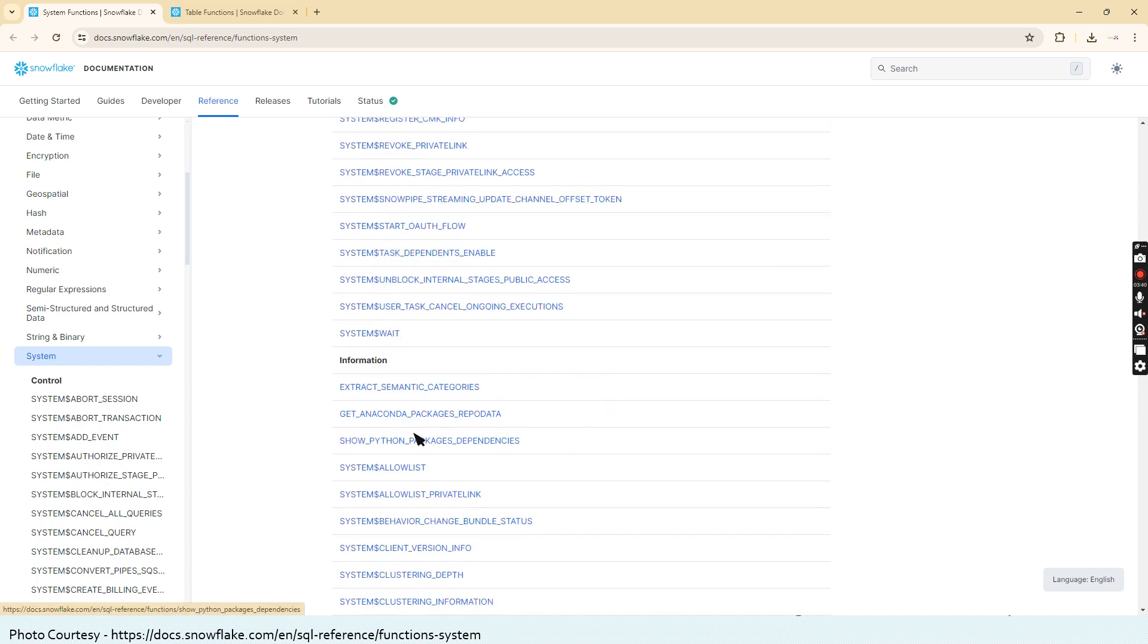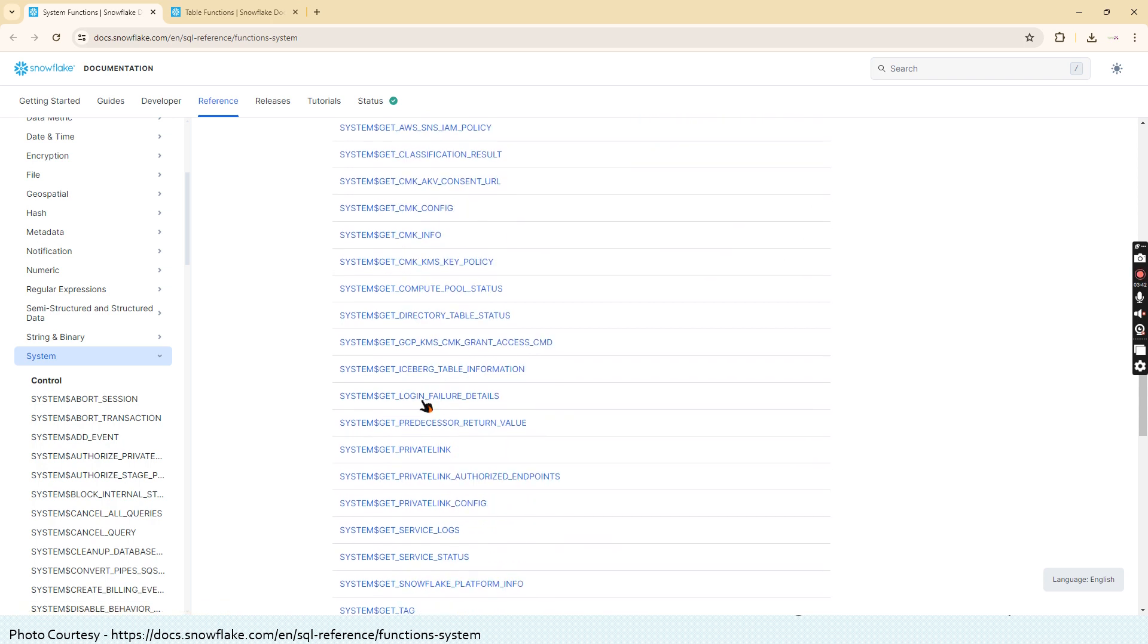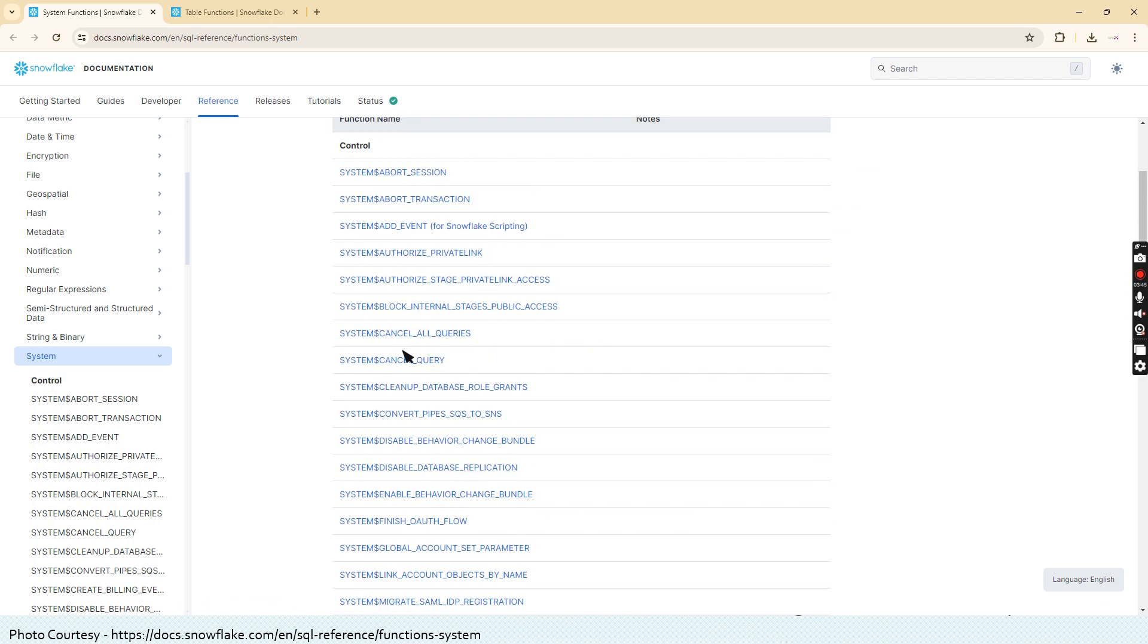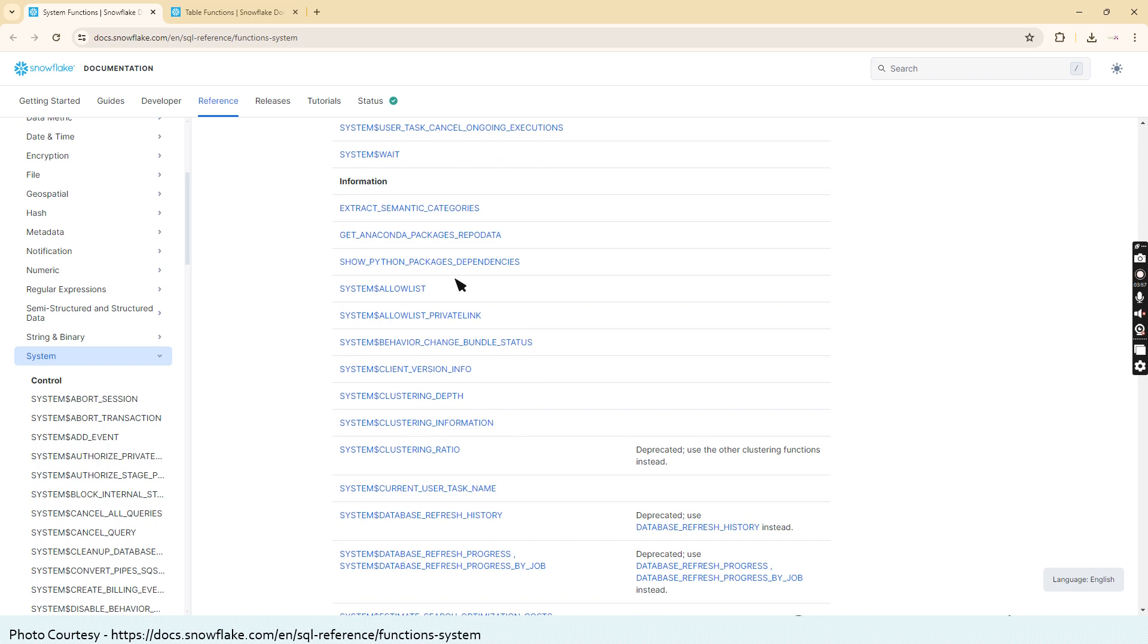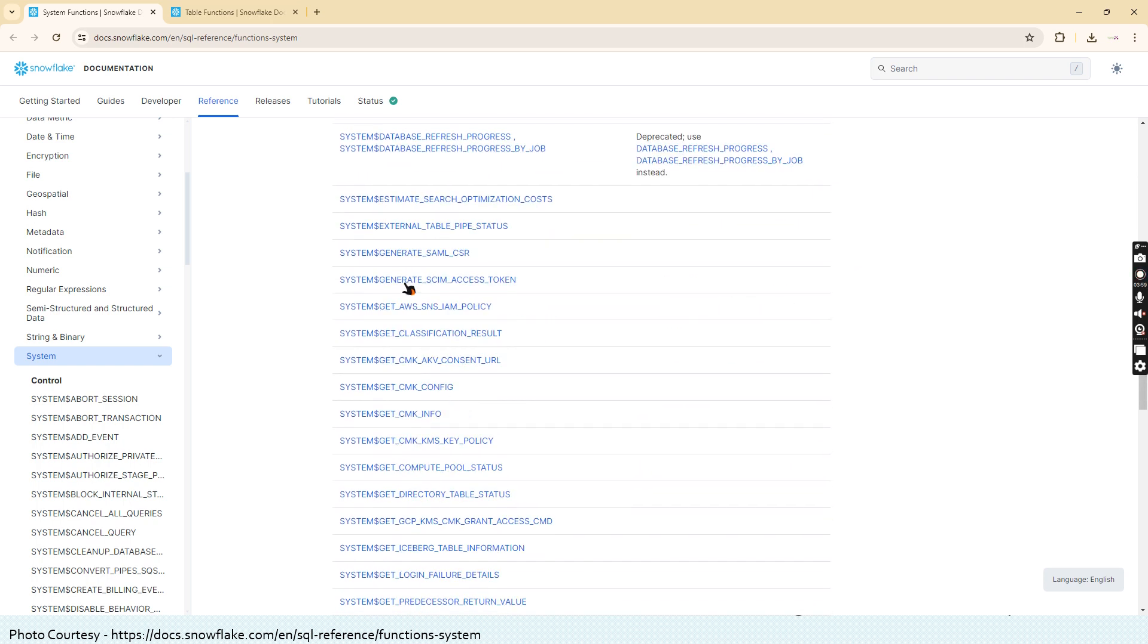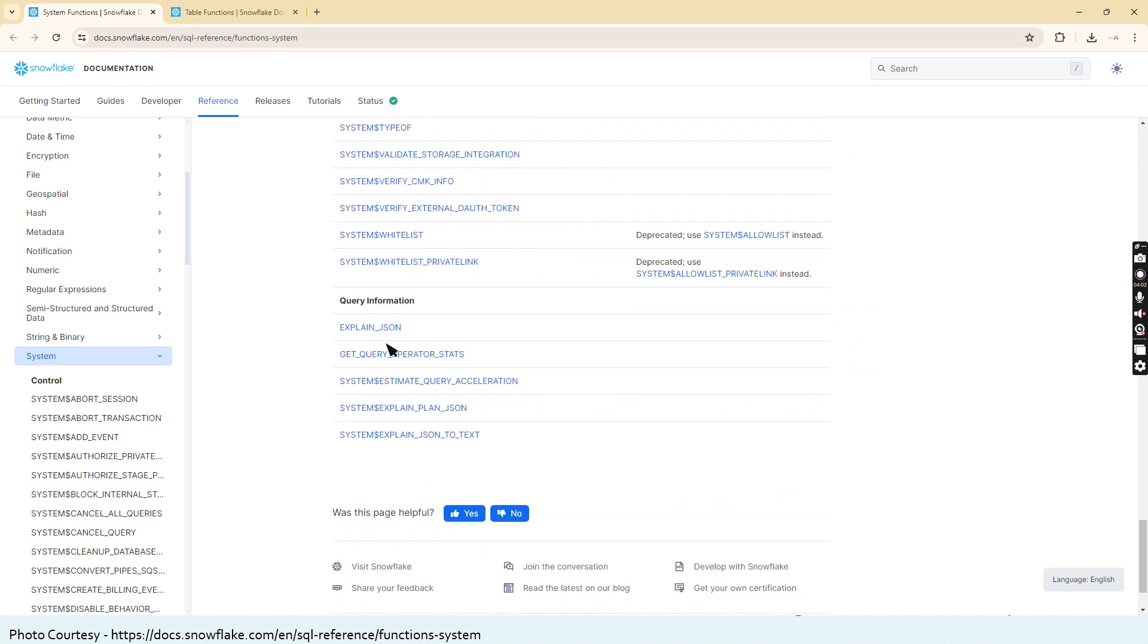These are all the set of information functions. As we discussed there are some very few functions which may not start. Here if you see extract semantic categories, get anaconda packages report data, show python packages dependencies, these are all not starting with system dollar. But most of the things are starting with system dollar.